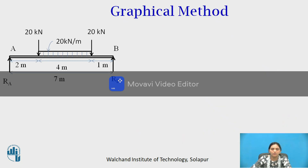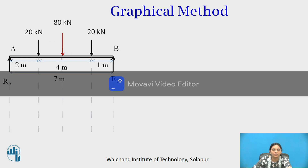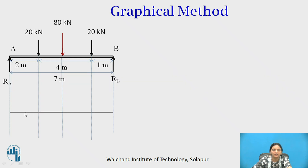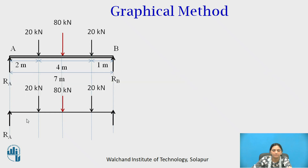First of all, convert the given UDL into a point load. The intensity of UDL is 20 kN per meter and it acts over a span of 4 meters. So replace this UDL by a point load of 80 kN. This is the free body diagram of the beam. Then below that draw the space diagram, where you measure distances. Draw at a scale of 1 cm per 1 meter, and show all external forces and the support reactions in the space diagram.